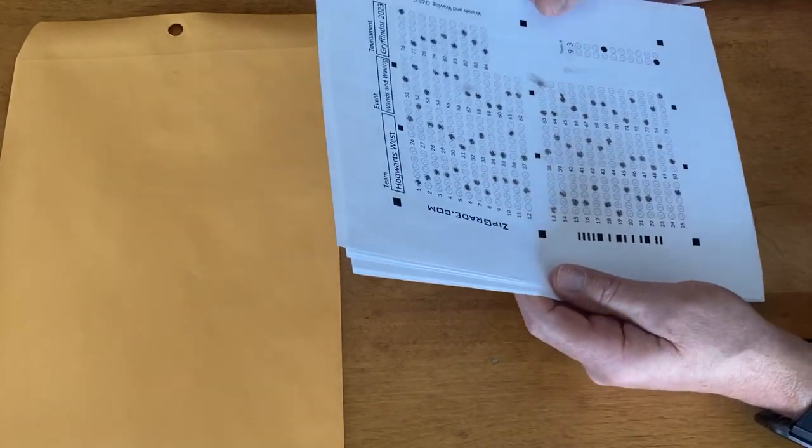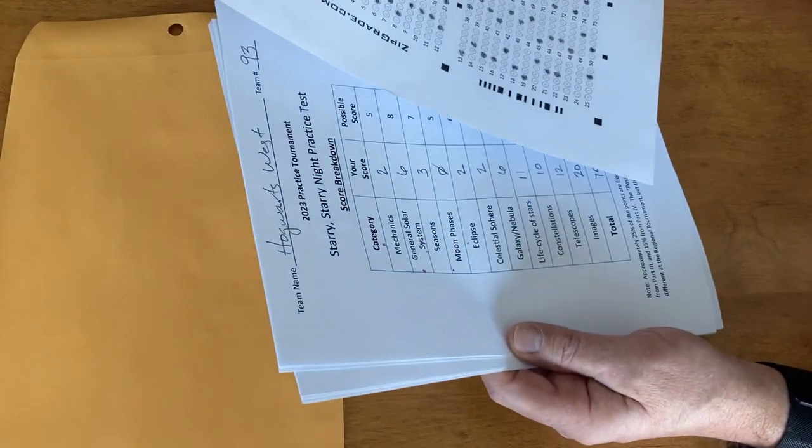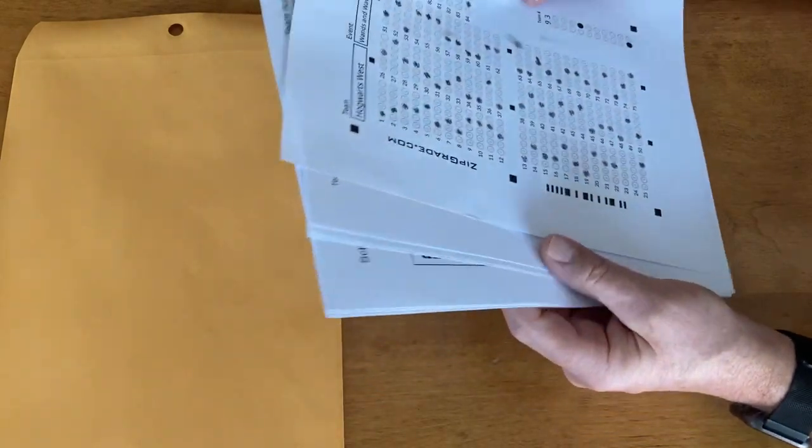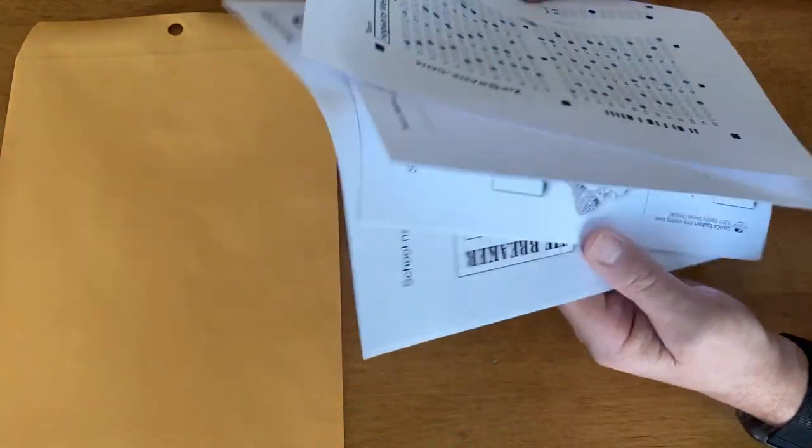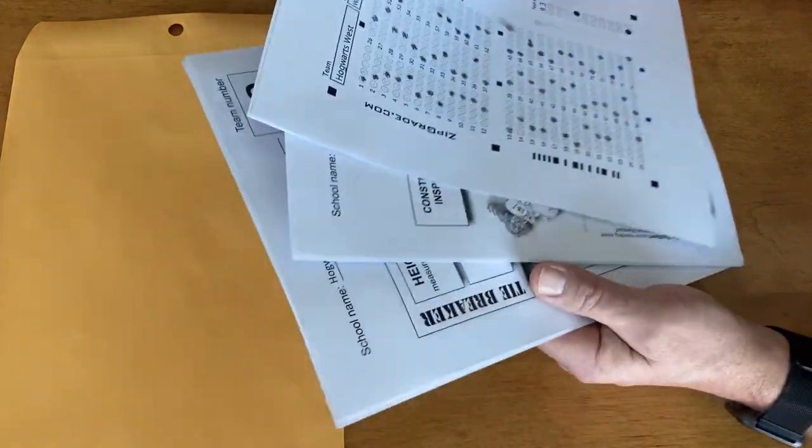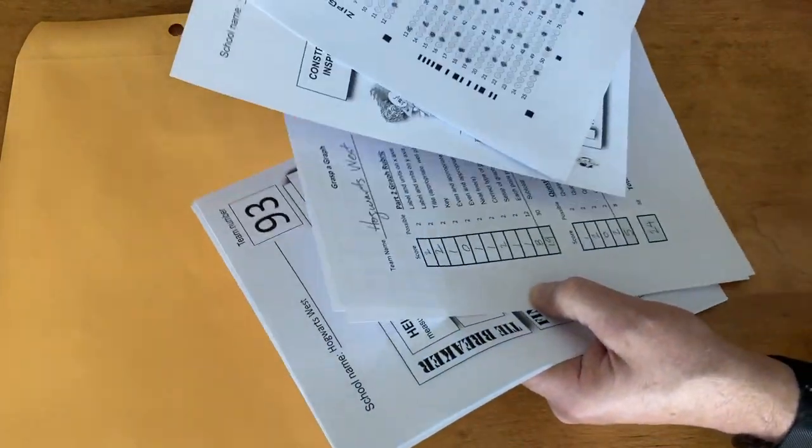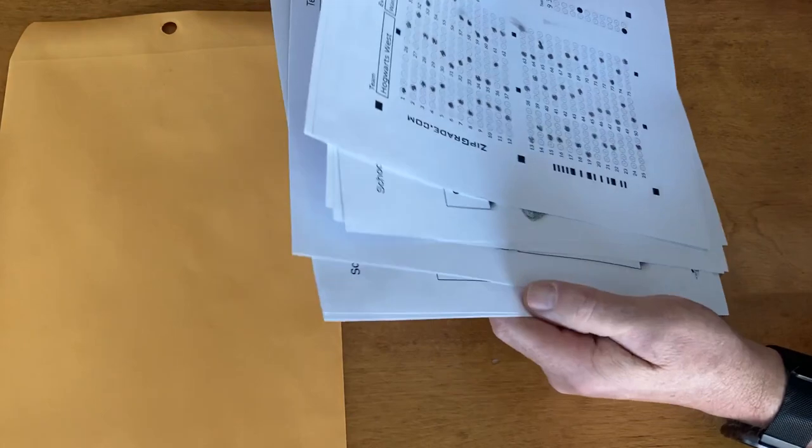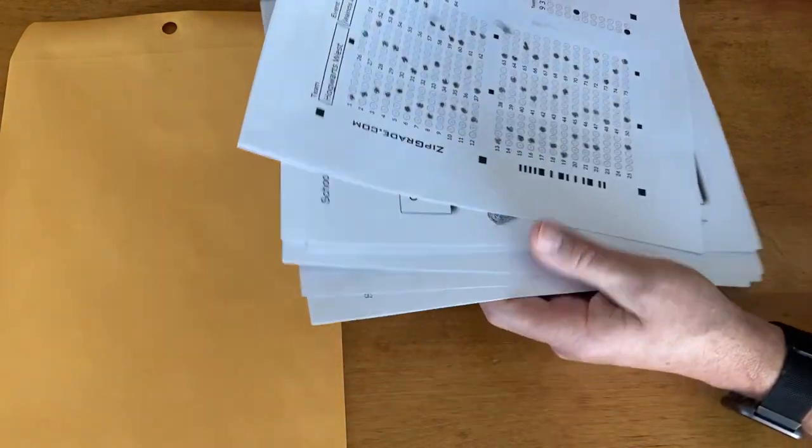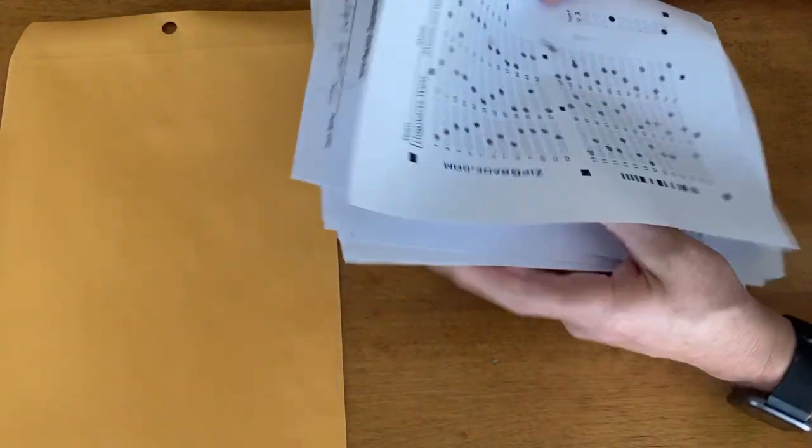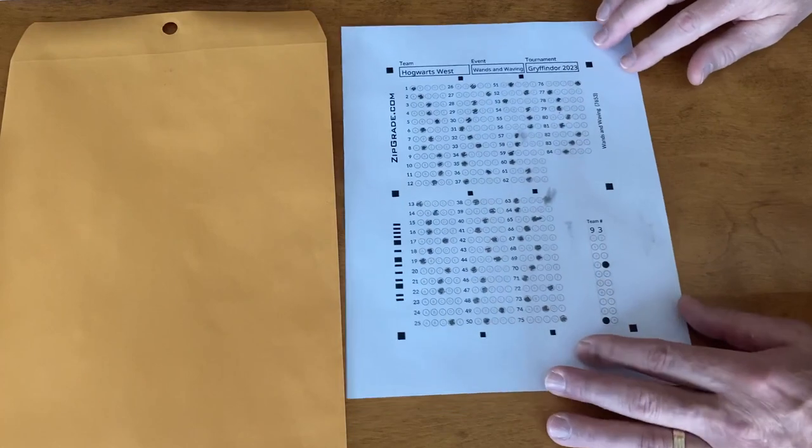Here's an example - we've got a zip grade form, and we've also got some of the other paperwork that's going to come in this package that goes to the head coach. In a separate video I'll talk about some of the details of these other score sheets, but for now I'm going to set these aside.